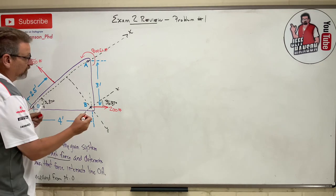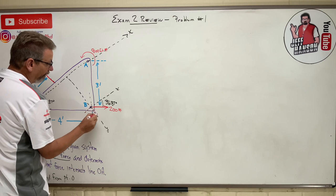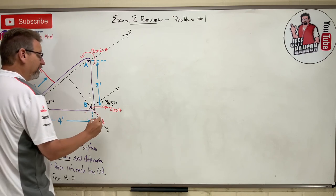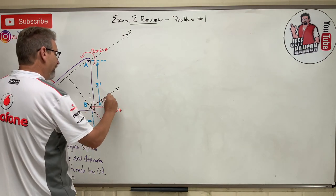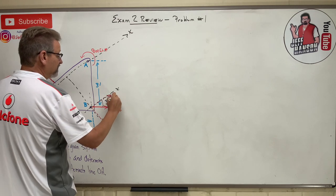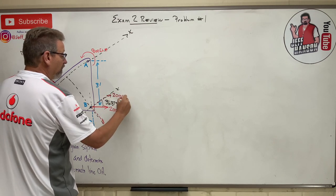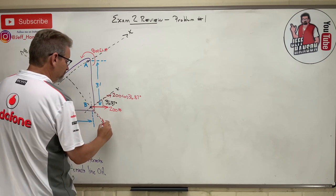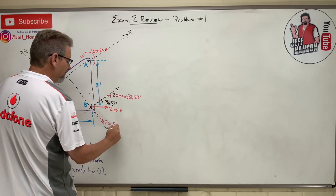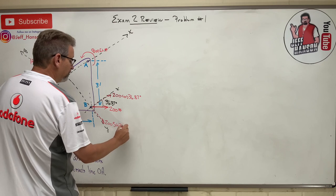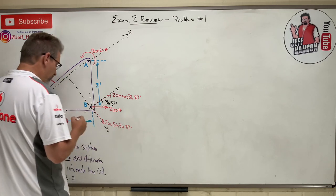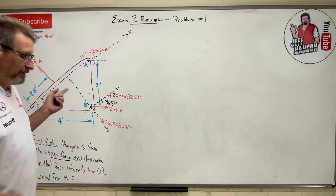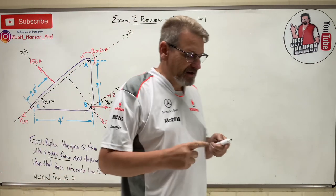This is 200 cos 36.87 and this is 200 sine 36.87. You could use the 3-4-5 trick on this, but to me there'll be less errors if you just convert it into an angle. That's my personal preference.